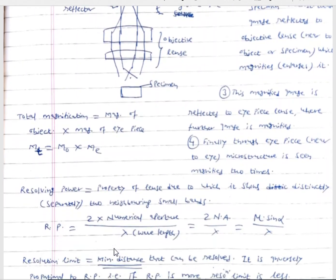There is another term — resolving power. It is the property of the lens due to which it shows distinctly or separately two neighboring small bands. It is numerically expressed as: resolving power equals two times numerical aperture divided by wavelength (lambda). Lambda is the wavelength of light, and numerical aperture is the light-gathering ability of the lens. The more the light-gathering ability of the lens, the more the resolving power.